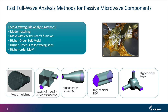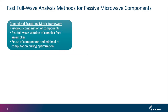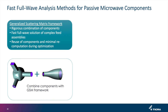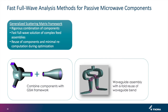Another class of problems is passive microwave components and feeds. We use a variety of methods: mode matching on horns, method of moments with a cavity Green's function, high order body of revolution MOM, high order finite element method, and higher order MOM. These methods are used on individual components, then a generalized scattering matrix framework glues the components together. This also allows easy component reuse — for example, if the same waveguide bend is used six times, we analyze it once and reuse the generalized scattering matrix six times.